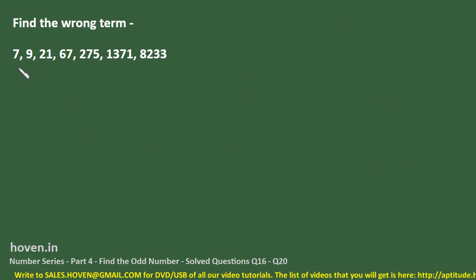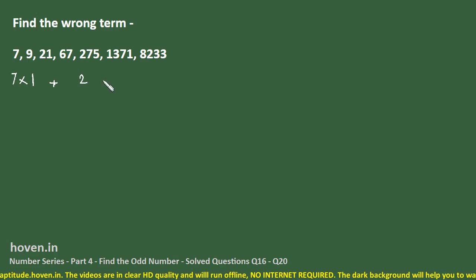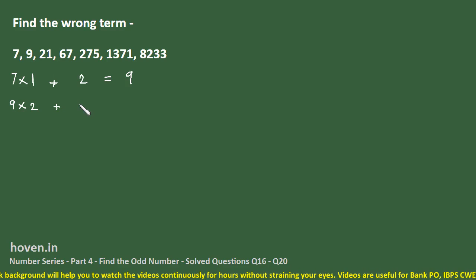Now we have to find the wrong term in this series. This series is exploding at this end: 7, 9, 21, 67, 275, 1371, 8233. Let us try to write a formula or a method of obtaining 9 from 7, then repeat that logic. So what we can write is 7 into 1 plus 2, it gives us 9. Now it may work or may not work. Now from 9 we have to go to 21. 9 into 2 plus 3 gives me 21.